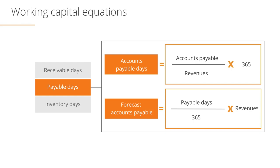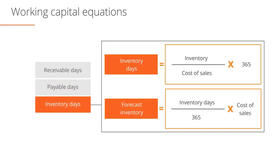The last working capital item to forecast is inventory. The inventory days ratio can be used to link forecast inventory to cost of sales. Once again, if cost of sales data is not available, revenues can be used. The first formula seen here defines the inventory days ratio. The second formula shows how we can use forecast cost of sales and inventory days to forecast inventories.